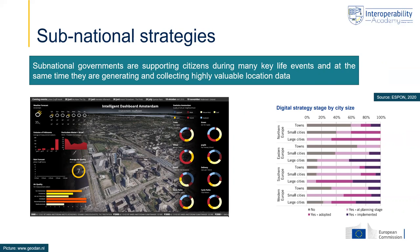When talking about sub-national governments and their strategies, it's important to be aware that there are really important differences and that they are not all at the same level of development. This is shown by a recent ESPON study that compared the stage of digital strategies in different cities of different sizes in different parts of Europe. The key message is that sub-national level governments are important actors, and it's also important that they develop a strategic approach so that all city departments work in the same direction to optimally take advantage of the added value of location data technologies.